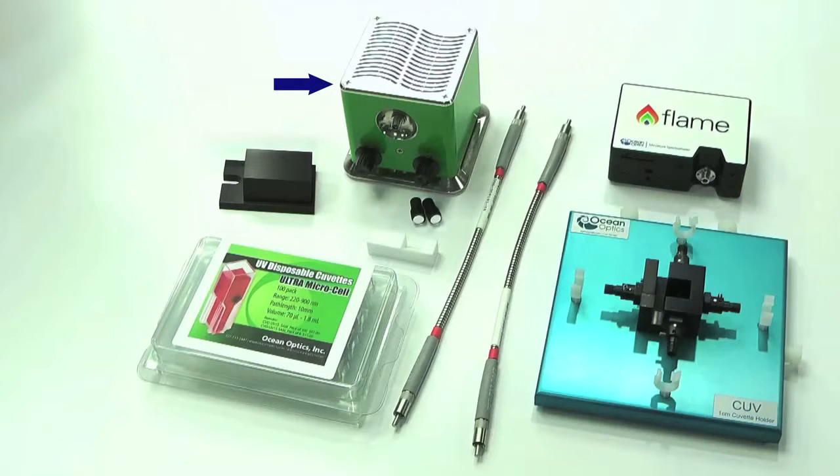The LLS high power LED light source with an output at 365 nanometers. This series of narrow band LED sources are ideal for fluorescent measurements.